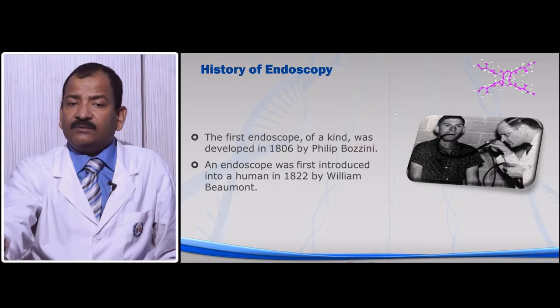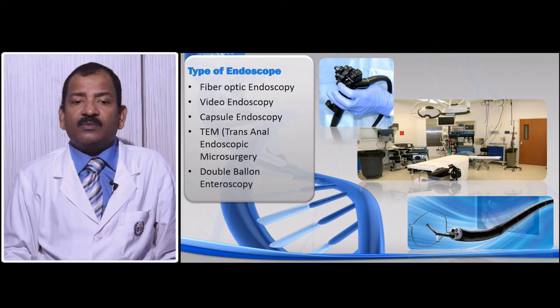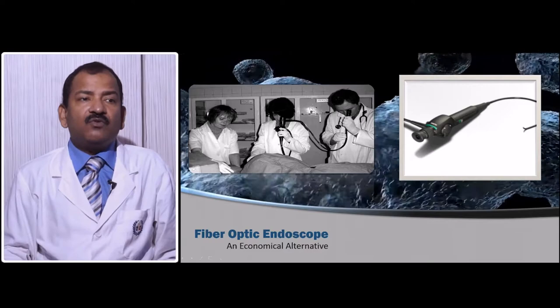Now there are many types of endoscopes available: fiber optic endoscope, video endoscope, capsule endoscope, trans-anal micro endoscopic procedures, and the double balloon endoscope. Among all those, the fiber endoscope was the first invented, and it works on the principle of total internal reflection.